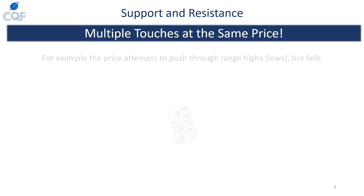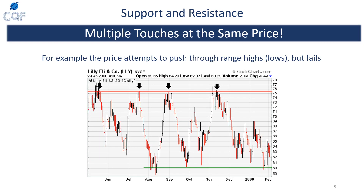The next method is multiple touches at the same price. Here you can see Eli Lily trying to break through about $75 on the resistance and about $60 on the support, with price touching those levels multiple times. You cannot draw your horizontal line until it has been hit at least two, and generally three, times. These lines are horizontal, and horizontal lines are much stronger than diagonal lines.